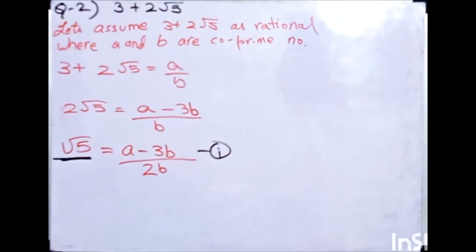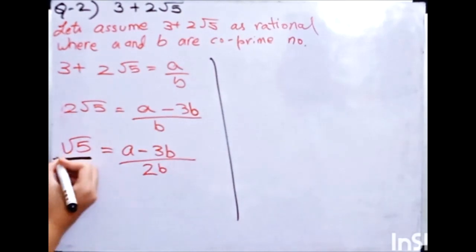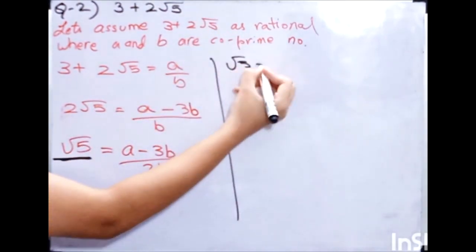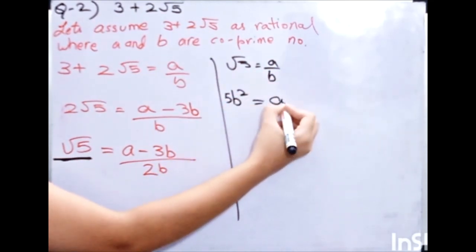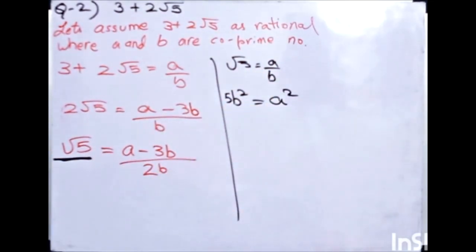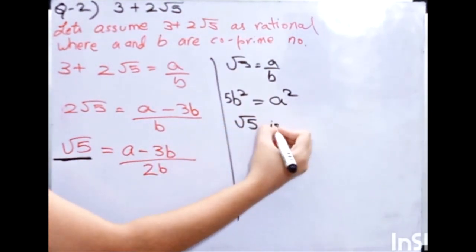You will write that root 5 is rational. But this contradicts, and that is why this is wrong. And now 3 plus 2 root 5 is irrational. What did I have done? We did that previous question. Then I have solved the whole root 5 by doing it like root 5 equals to a upon b. 5b squared equals to a squared. And then I have solved it. And last time, what did I have done? That root 5 is irrational.